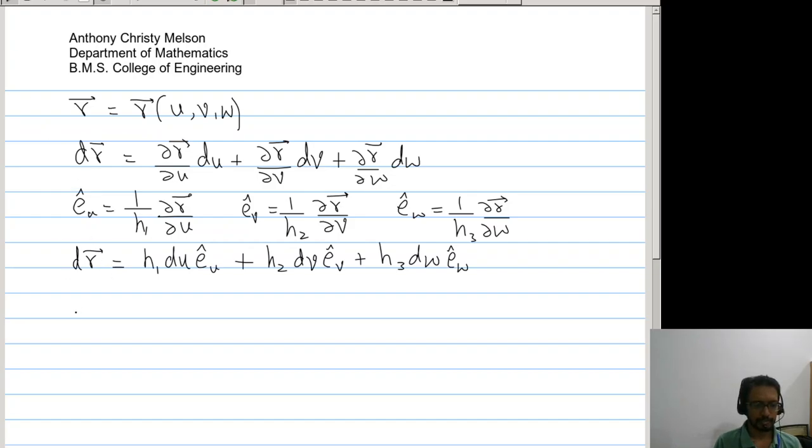Now using this we can define the elementary arc length, elementary area, and elementary volume. If s is the arc length, then ds squared is dr dot dr, so ds squared will be h1 squared du squared plus h2 squared dv squared plus h3 squared dw squared.